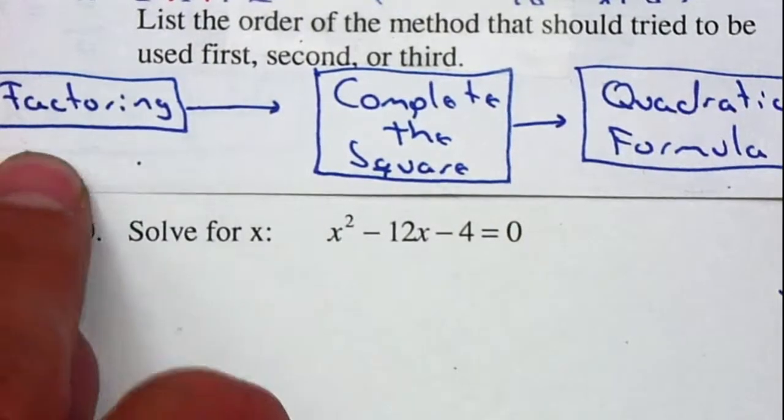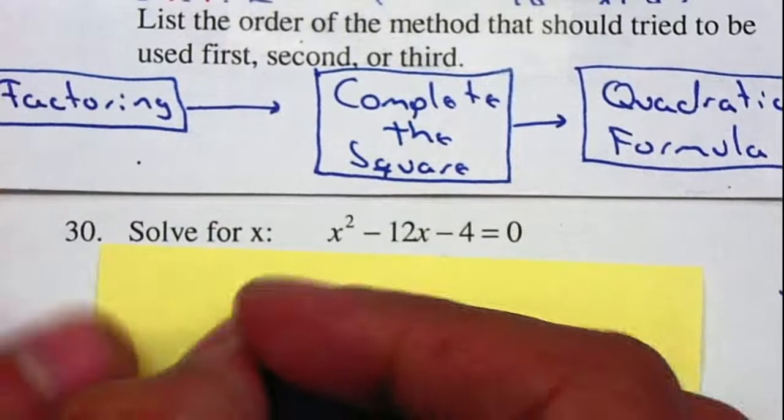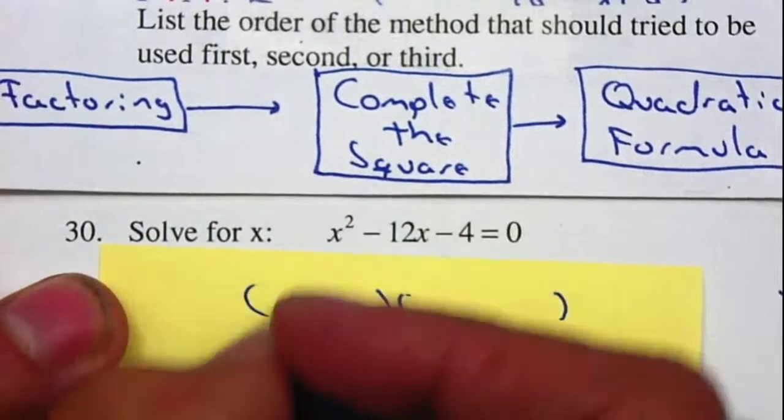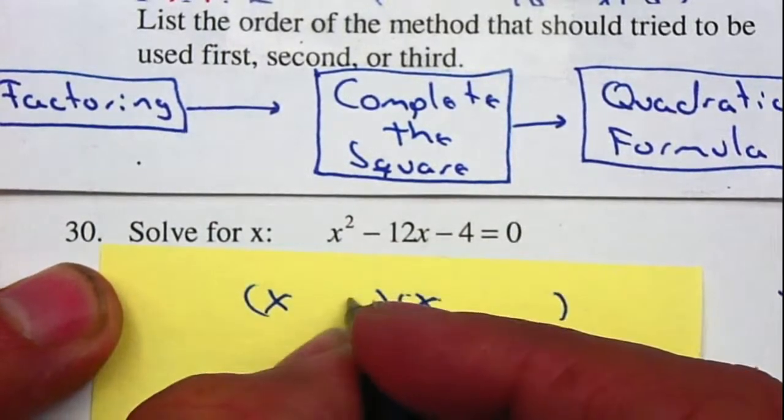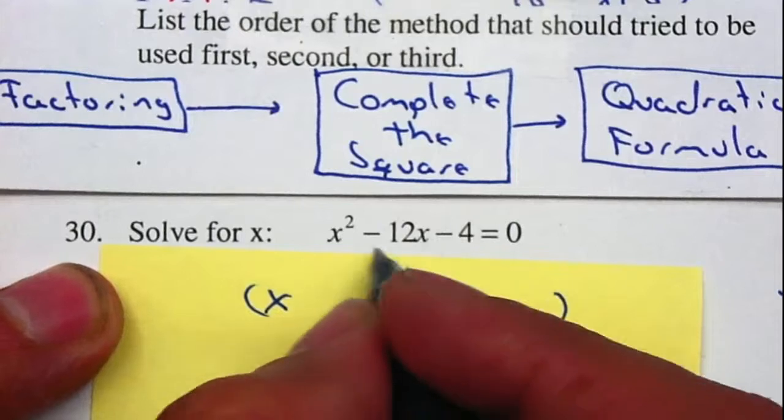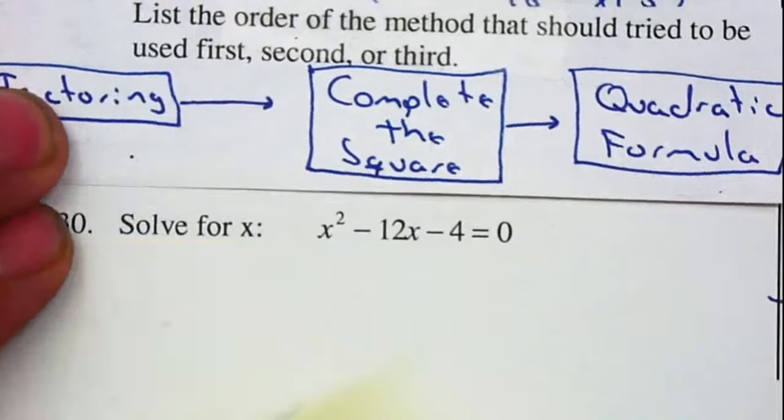So first, if I try to factor this trinomial, this quadratic equation, I can use my double parenthesis. Factors of x² will give me x and x. Factors of 4 are 2 and 2 or 4 and 1. Either way, I'm not going to be able to get the negative 12x that I need, so this cannot be factored.